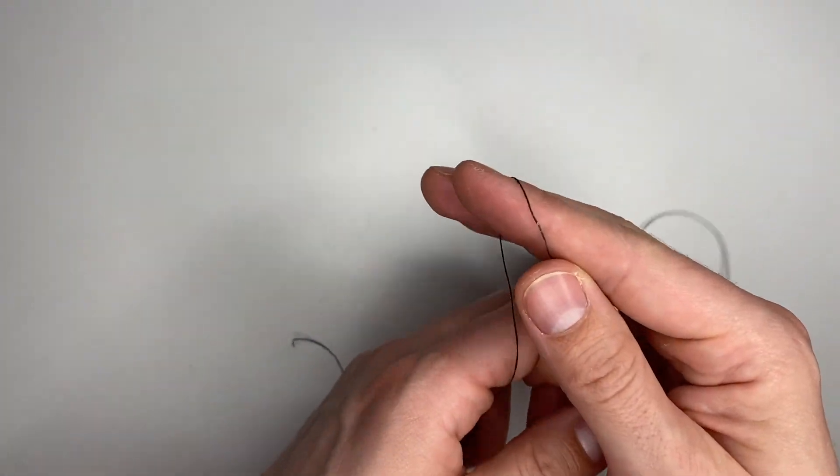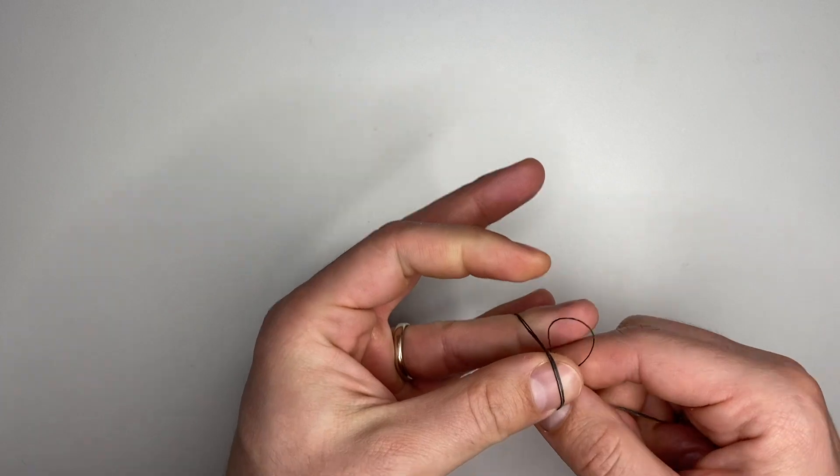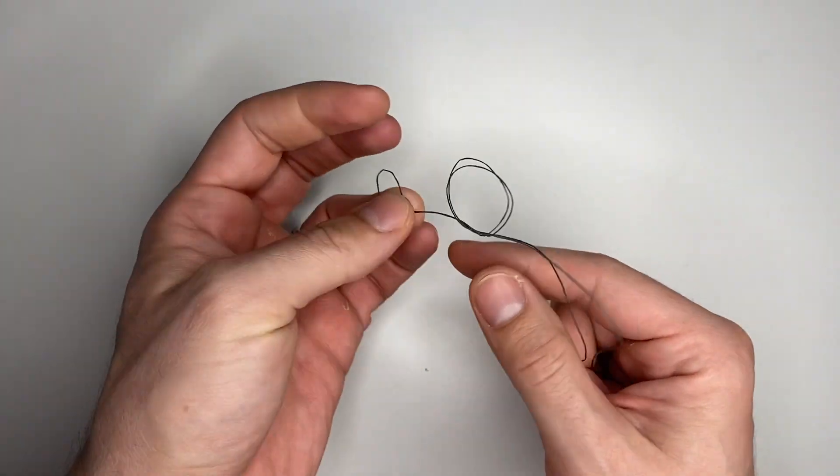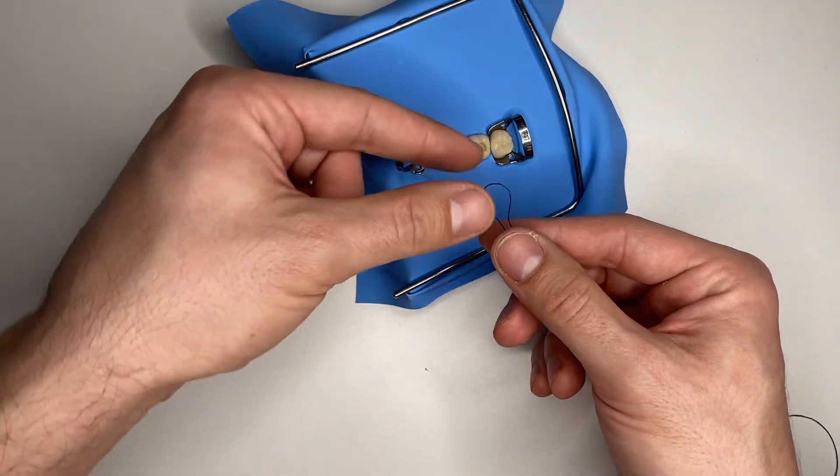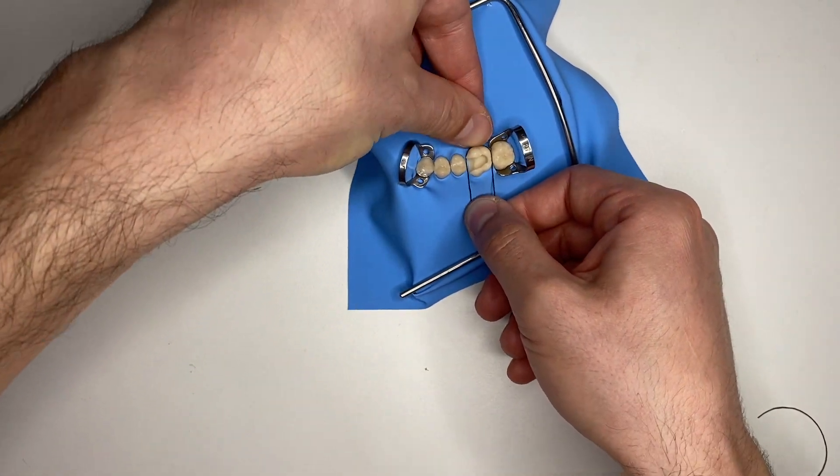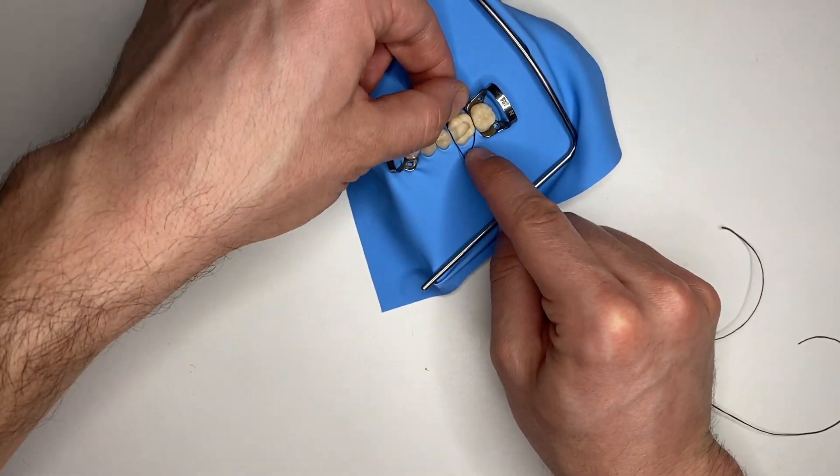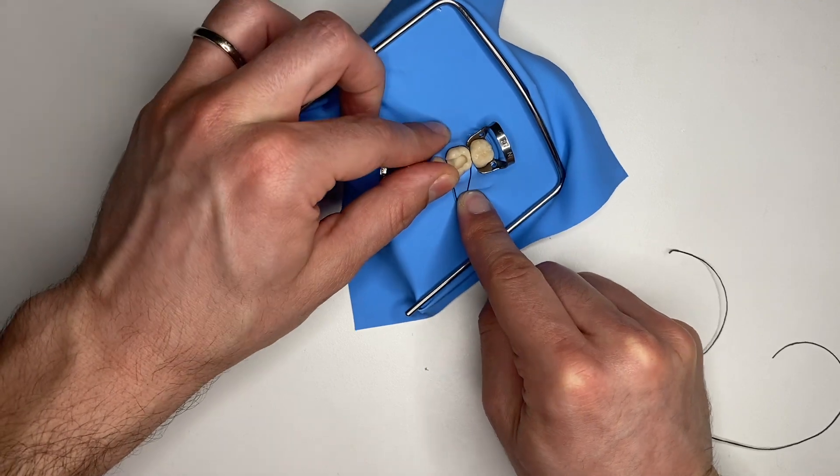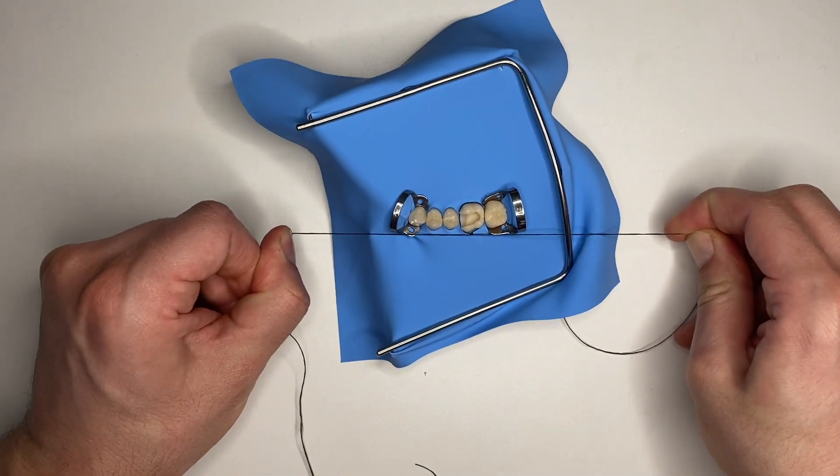These are very comfortable to use if you have an assistant, because your assistant will be able to fix the end of your ligature on the palatal aspect of your tooth using a metal probe, and you will be able to use both of your hands to tighten the bow and keep it where you want it.